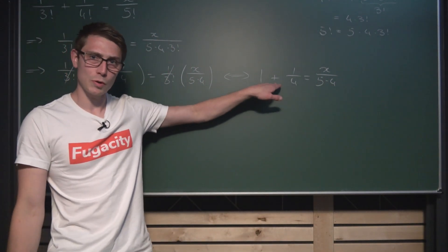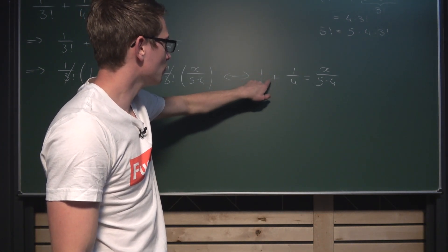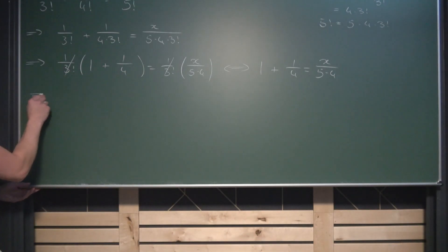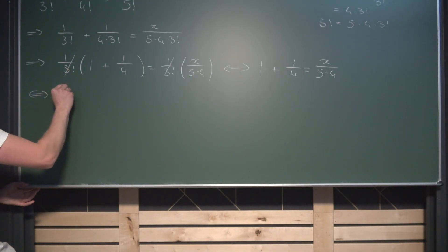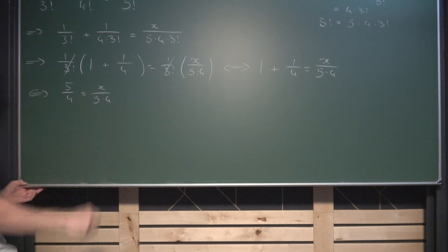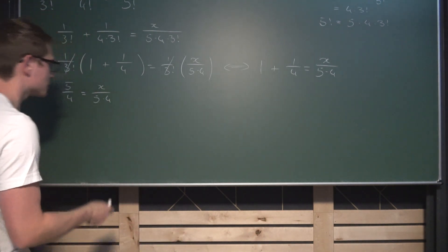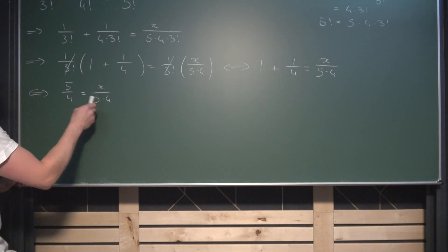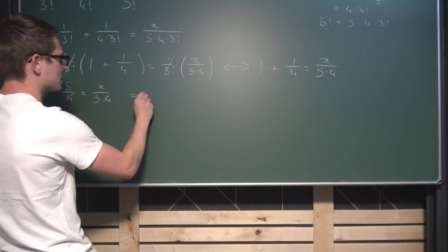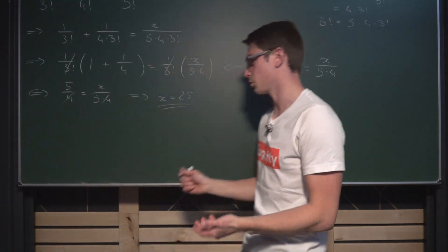Now we expand the fraction on the left: 4 over 4 plus 1 over 4 gives us 5 over 4. So overall we get 5 divided by 4 equals x divided by 5 times 4. We can see that 4 is a common factor on both sides — multiplying both sides by 4 cancels it out, and then multiplying both sides by 5 gives us x equals 25. And thus we have solved our original equation.